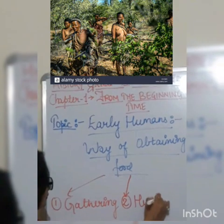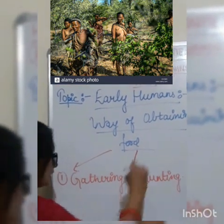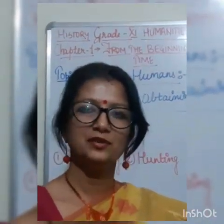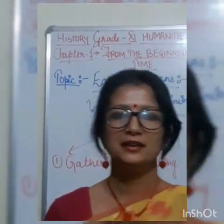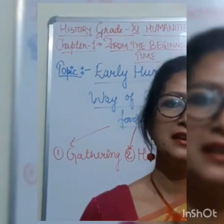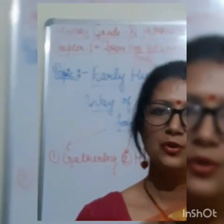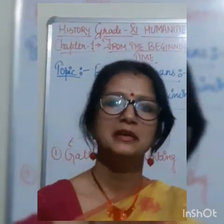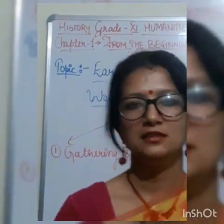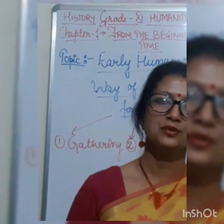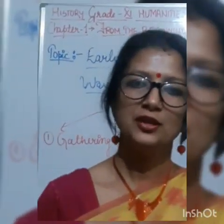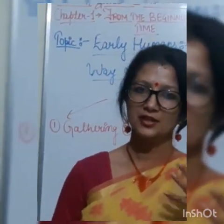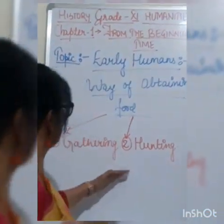The second way of obtaining food is hunting, which is now banned and highly punishable. But in ancient times, early men lived freely in nature and did not know about such restrictions. Hunting was another way of obtaining food and started around 5 lakh years ago. These early hominids used to hunt in a very planned way with good strategy to catch animals.